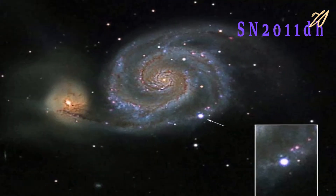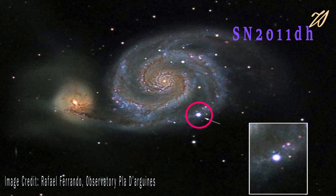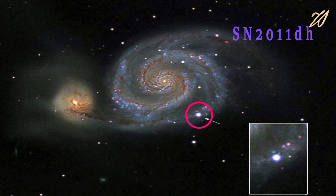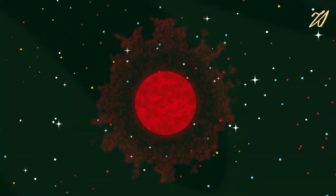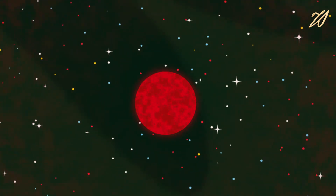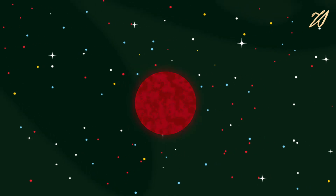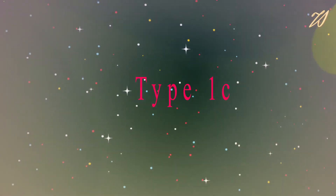SN 2011DH, hosted in the galaxy NGC 5194 located 23 million light years away, is an example of type 1B. For some other massive stars, the helium-rich layer also blows away, exposing the carbon-rich layer. The supernovae occurring in this case is type 1C.